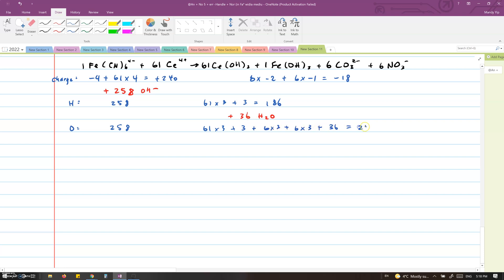And we see that the equation is indeed balanced. So, our final balanced equation turns out to be 1Fe(CN)6 4- plus 61Ce 4+, plus 258 OH- to produce 1Fe(CN)6 3-, 61Ce(OH)3, 6CO3 2- plus 6NO3- and 36 waters.